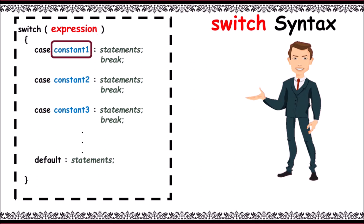After it, control comes out of the block by the help of break statement. If constant 2 is generated by expression, these statements are executed and control gets exited.